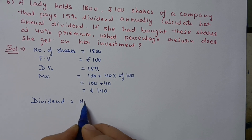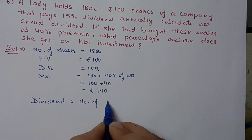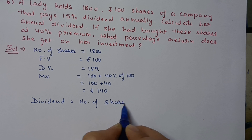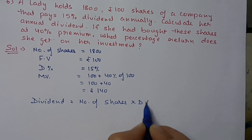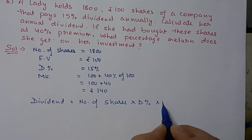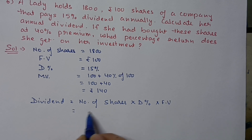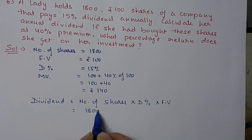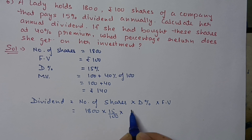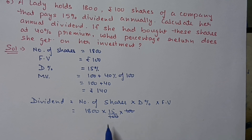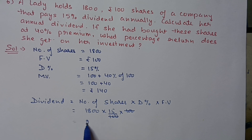Dividend is equal to number of shares multiplied by dividend percentage multiplied by face value. Number of shares is 1800, dividend percentage is 15%, and face value is 100 rupees. Cancelling the 100s and multiplying 1800 by 15, we get 27,000 rupees as the annual dividend.